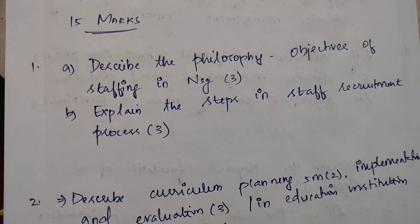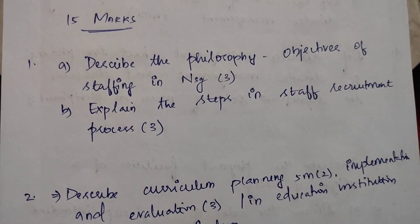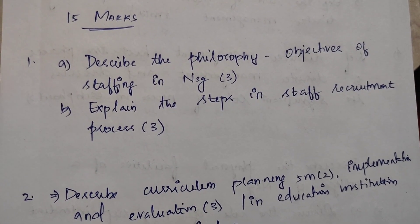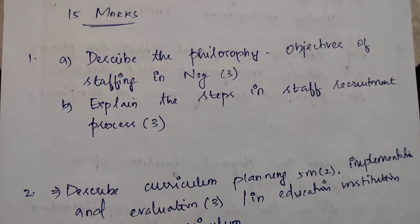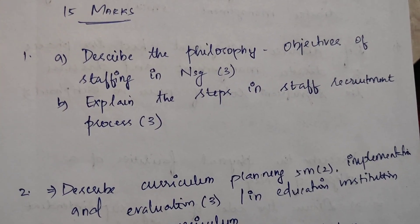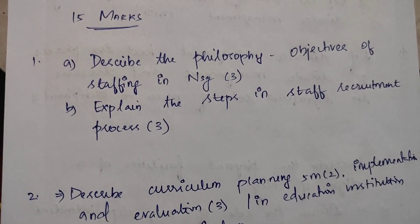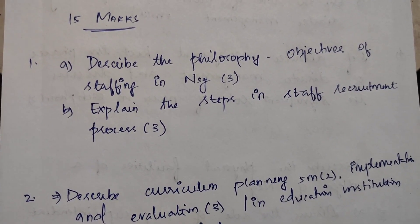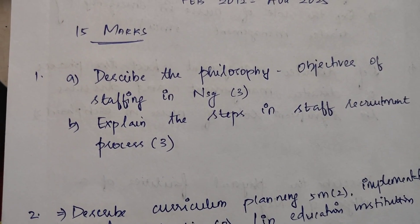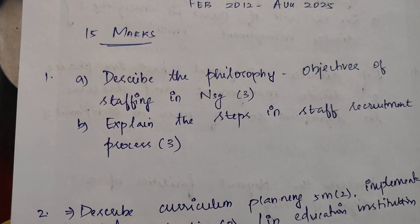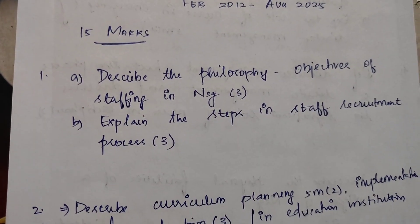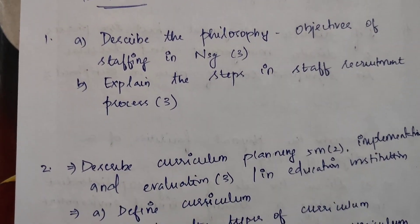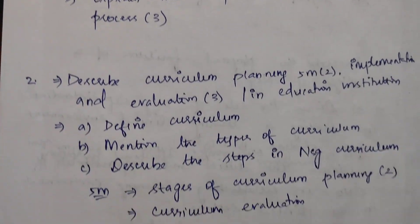First question: describe the philosophy and objectives of staffing in nursing — this question appears three times. Next, explain the steps in the staff recruitment process — three times. In both questions, we will get this from option A and B. Overall, there are three times in 15 marks.